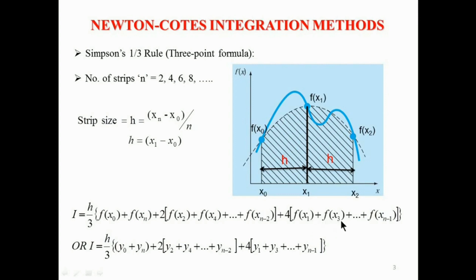The odd terms of f(x) are f(x1) + f(x3) + f(x5) + … + f(xn−1). If we set y = f(x), then y0 = f(x0), y1 = f(xn), y2 = f(x2), and so on. This is the full formula for Simpson's 1/3 rule.